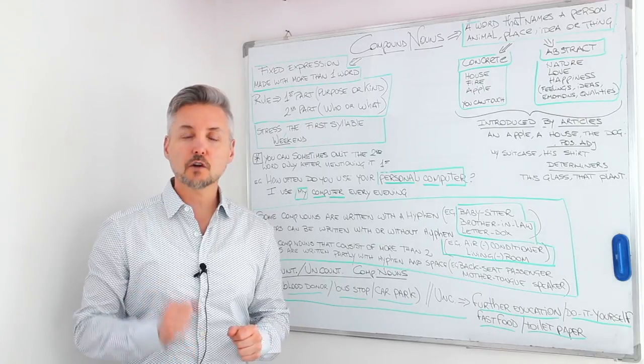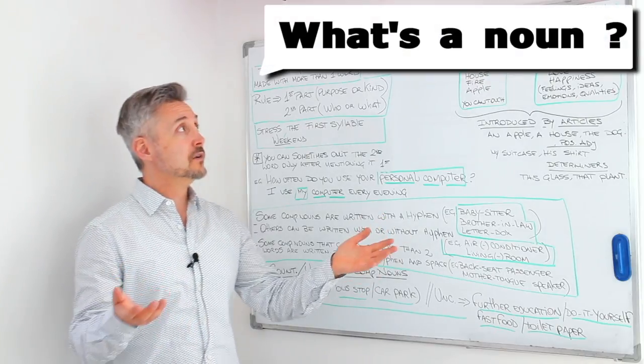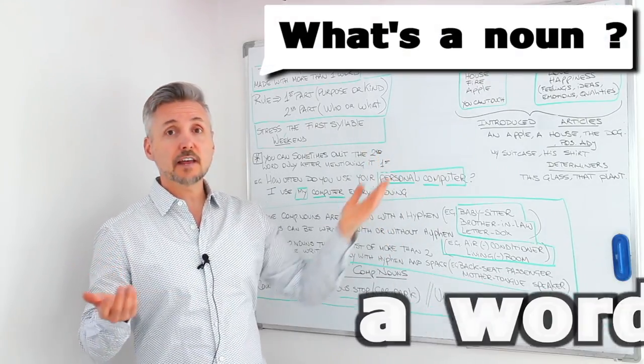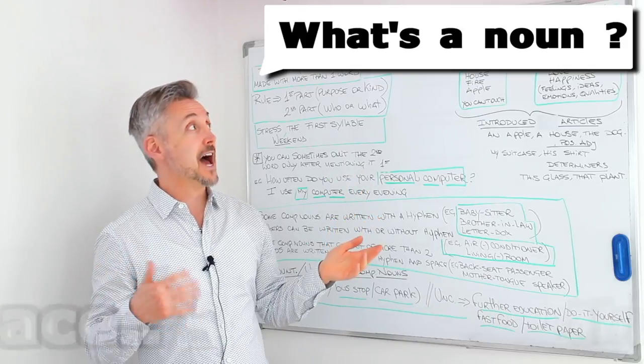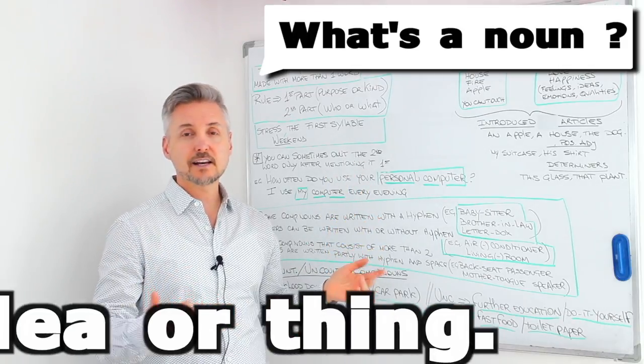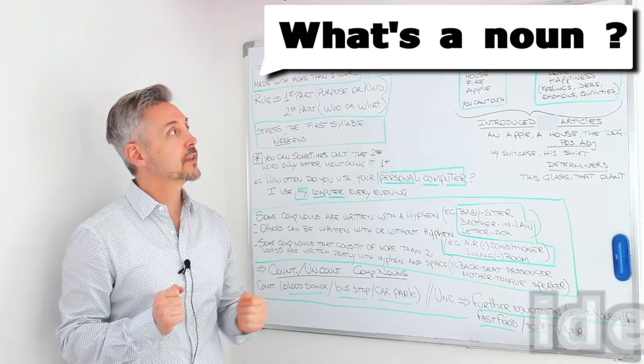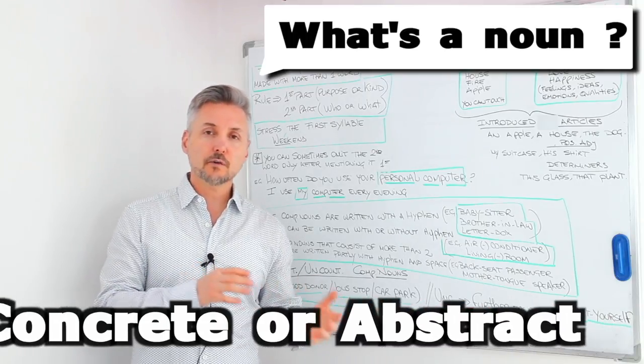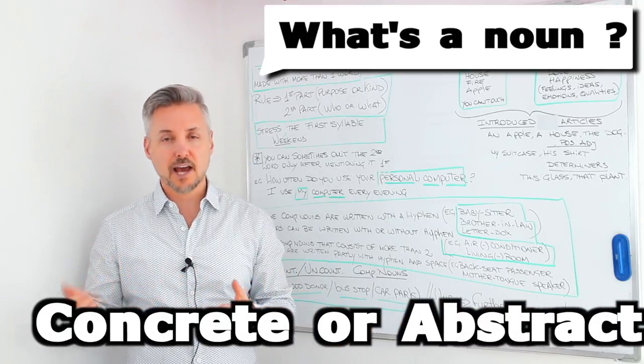Right, we're going to talk about compound nouns. A noun is a word that names a person, an animal, a place, an idea or a thing. There can be concrete or abstract nouns.